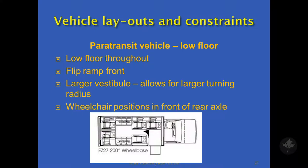This is an example of what we're starting to see emerge on the market — low-floor paratransit vehicles. They have a flip ramp at the front, generally a fairly generous vestibule that allows for large turning radiuses, which we see with scooters. The wheelchair position, at least on some of these, is located in front of the rear axle. We really strongly suggest that if you're looking at positioning of our more vulnerable passengers, the seating area be located between the front and the rear axles.